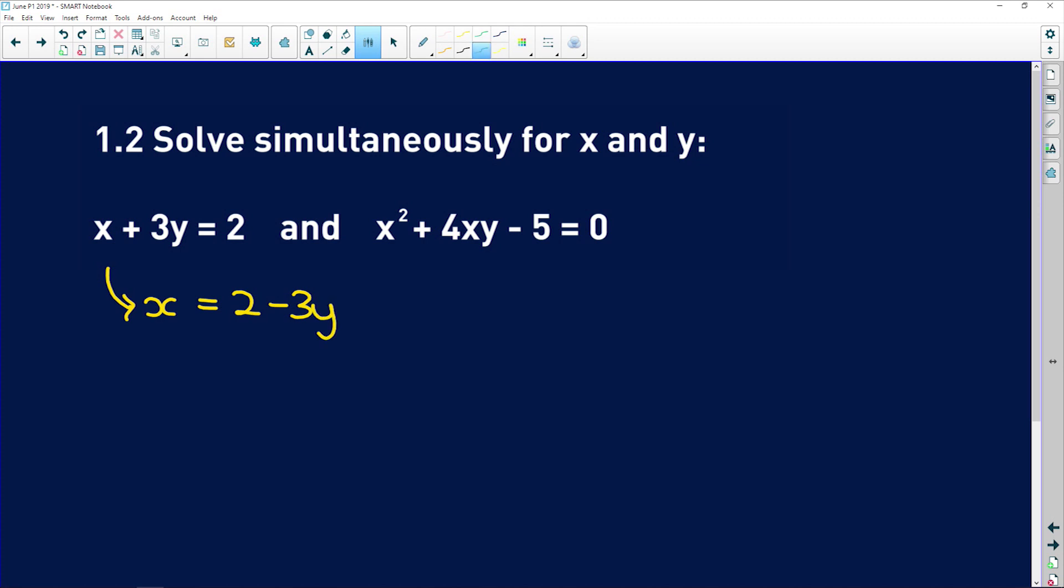So now what happens is every time I see an x in this equation here, I substitute this whole expression in there. So that gives us x squared is 2 minus 3y all squared plus, over here I'm going to group the 4 and the y together just to make it a little bit neater, so I get 4y. But remember there's still an x in there, so I need to say 2 minus 3y minus 5 is equal to 0.